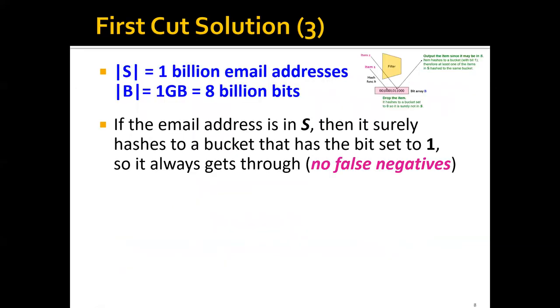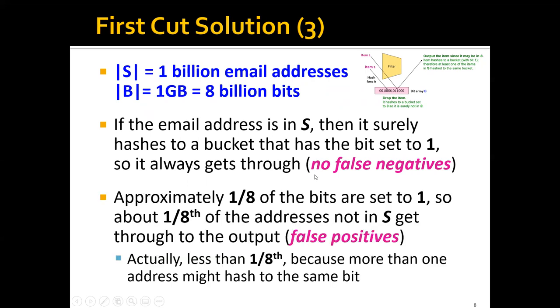As a more concrete example, let's say that we have one billion email addresses, and we have one gigabyte, eight billion bits, in the bit array. So if the email address is in the set S, then it surely hashes to a bucket that has the bit set to 1. So it's always going to get through. We have no false negatives, 100% recall.